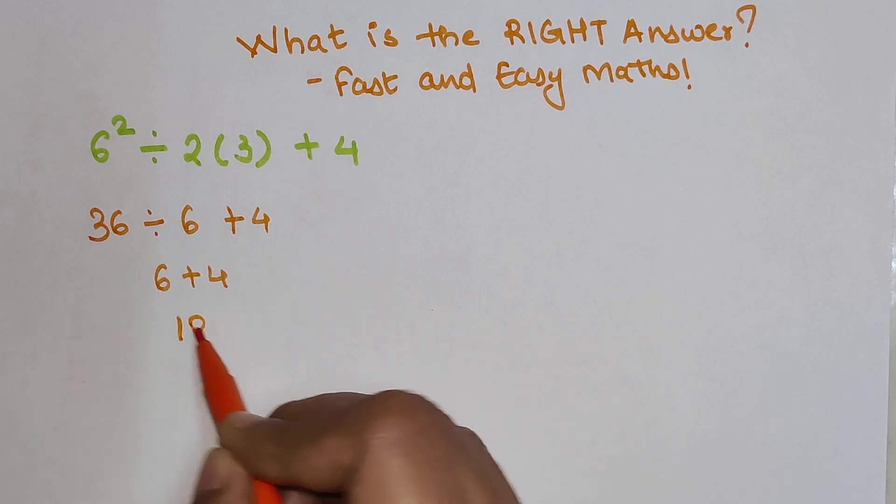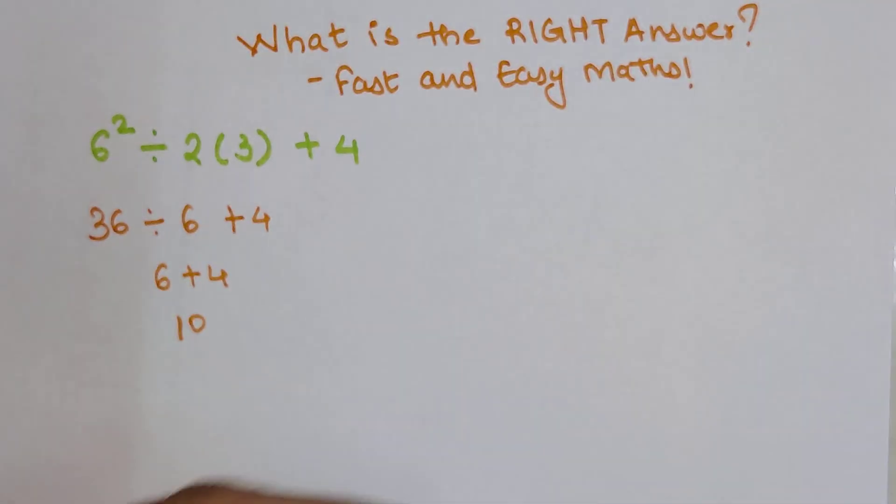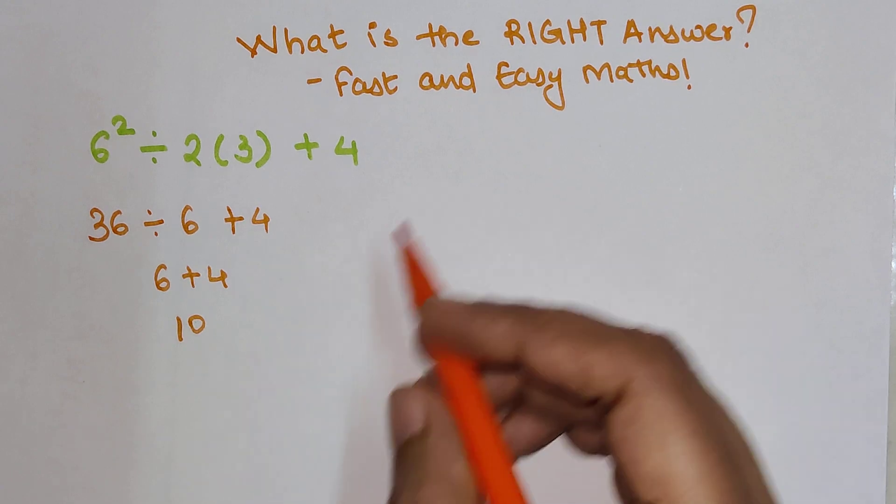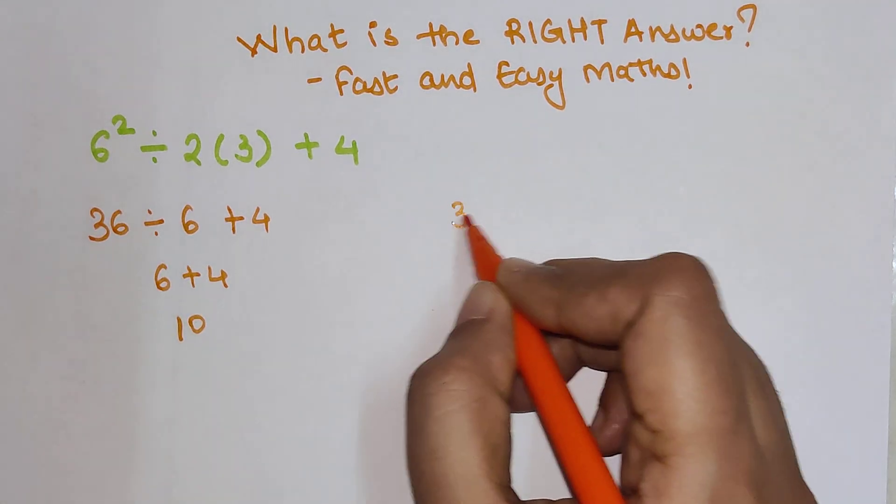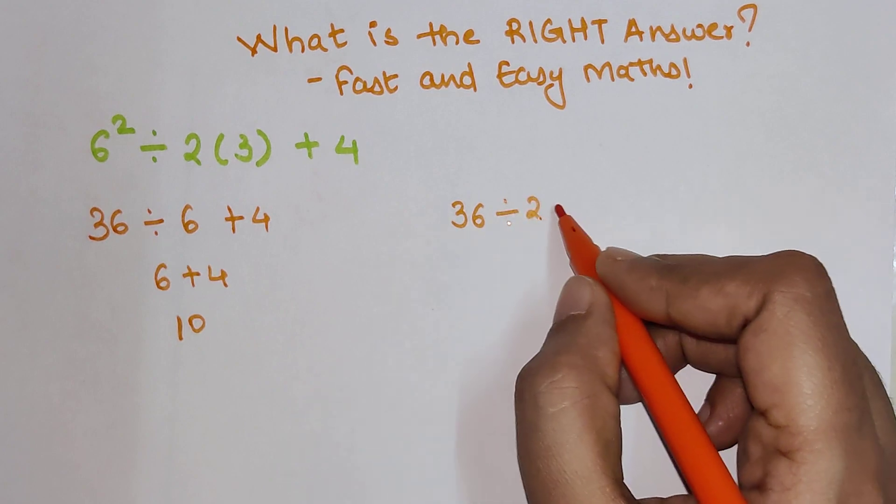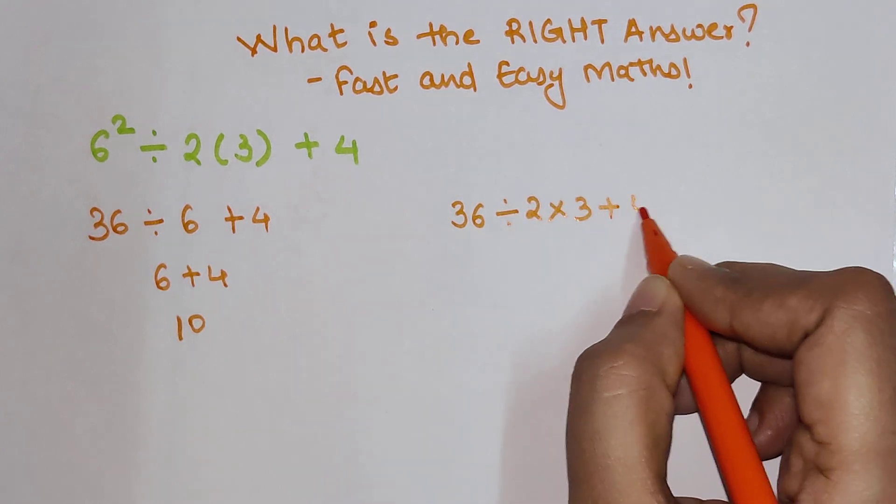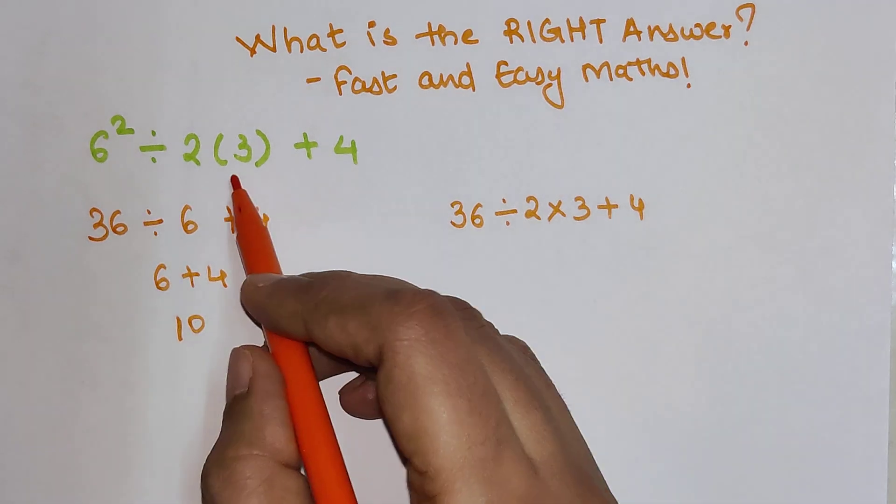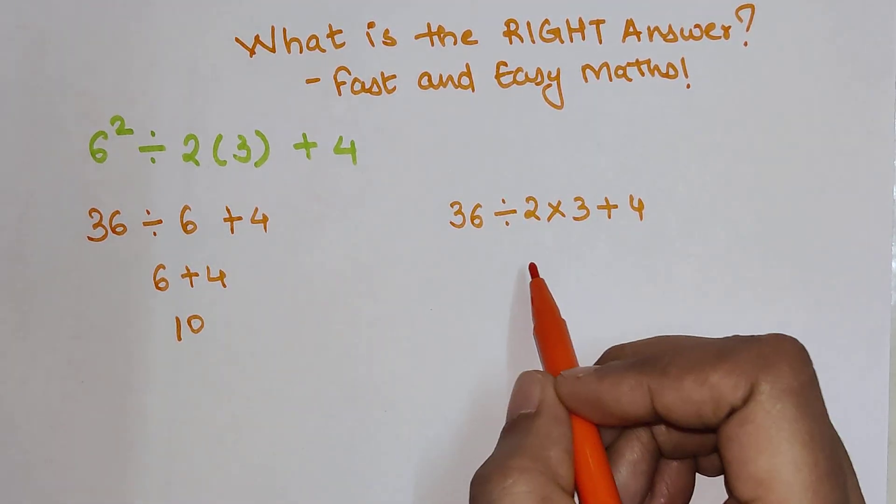6 plus 4 gets you 10. Now there is a second method to this, which is 36 divided by 2 into 3 plus 4, because the bracket is considered as multiplication.